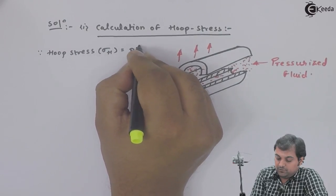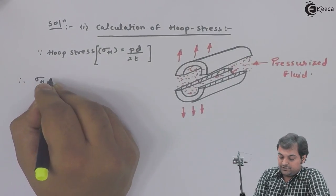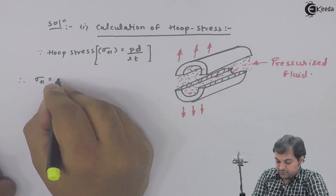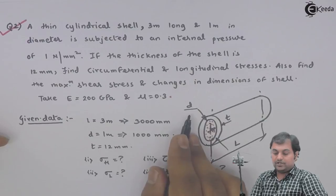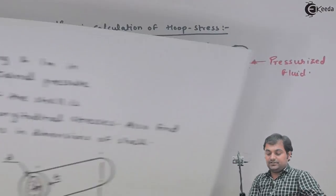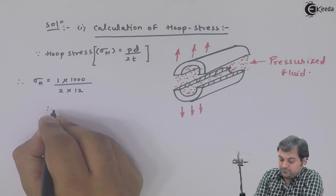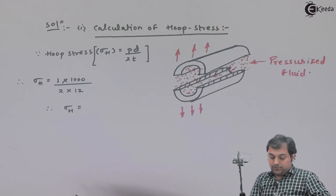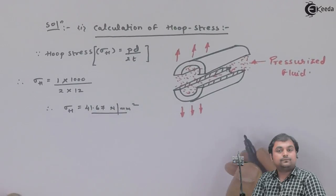Hoop stress is given by: sigma_h = pd / 2t. Therefore sigma_h equals internal pressure (1 Newton per mm square) multiplied by internal diameter (1000 mm), divided by 2 times 12. From this, hoop stress equals 41.67 Newton per mm square. This is our first answer.